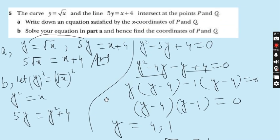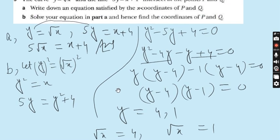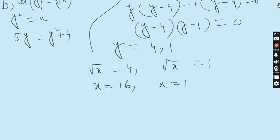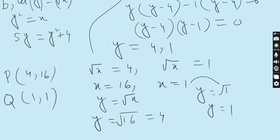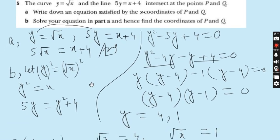Now the requirement is to find the coordinates of P and Q. Substitute x = 16 and x = 1 into y = √x. For x = 16: y = √16 = 4, so the coordinates of P are (16, 4). For x = 1: y = √1 = 1, so the coordinates of Q are (1, 1). Hope you understand entire question number 5 — a very easy and important question from the examination point of view. Move to question number 6.